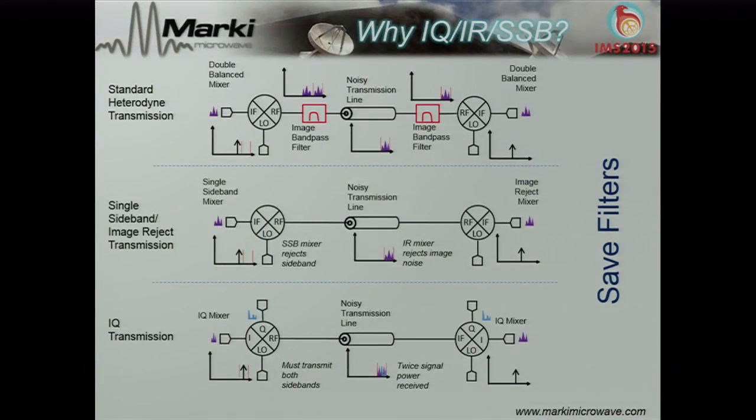With IQ mixers, it's a little more complicated. Instead of transmitting only one sideband, you still have to transmit both sidebands using IQ transmission techniques. You would transmit two half-data-bandwidth signals into the same bandwidth channel, and you use the orthogonality of them to prevent yourself from having to filter out the sideband at the input. At the output, you use IF filters to eliminate all the adjacent channel transmissions.